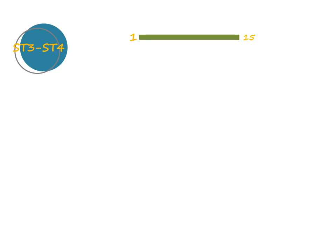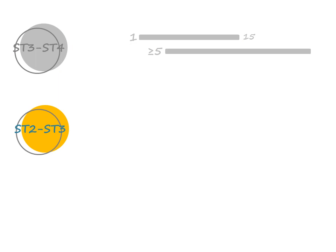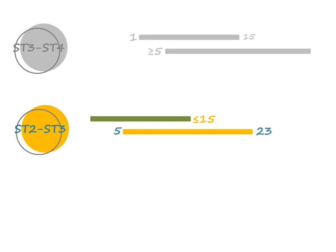Wide age ranges were obtained for the three stages of fusion in the primary centers. Between the third and fourth sternebrae, partial fusion was recorded on individuals aged between one and fifteen years of age, and complete fusion on individuals aged five years or older. Between the second and third sternebrae, non-fusion occurred on individuals fifteen years or younger, and partial fusion between individuals aged five to twenty-three years.